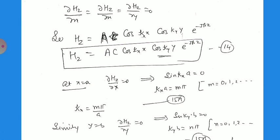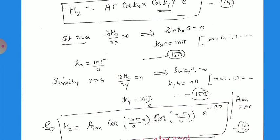Applying the second boundary condition — ∂Hz/∂x equals zero at x equals a — we differentiate to get a term containing kx times sin(kx·a) times cos(ky·y), which must equal zero. This requires sin(kx·a) equals zero, meaning kx·a equals m·pi for integer m equals 0, 1, 2, 3, …, so kx equals m·pi/a. Similarly, applying ∂Hz/∂y equals zero at y equals b gives sin(ky·b) equals zero, so ky·b equals n·pi, giving ky equals n·pi/b, for n equals 0, 1, 2, 3, …